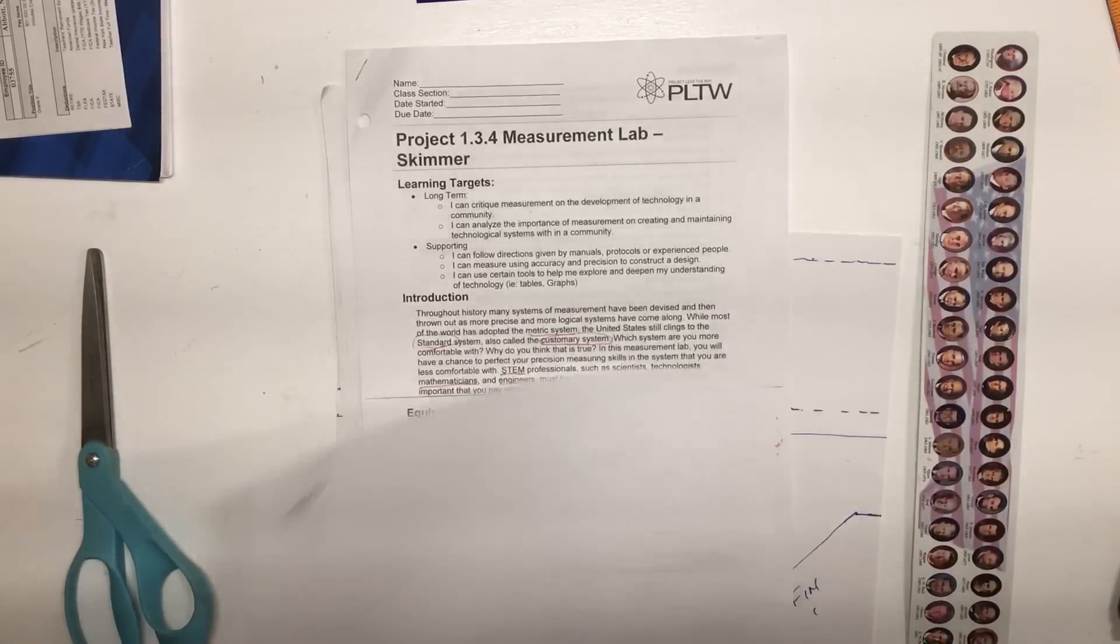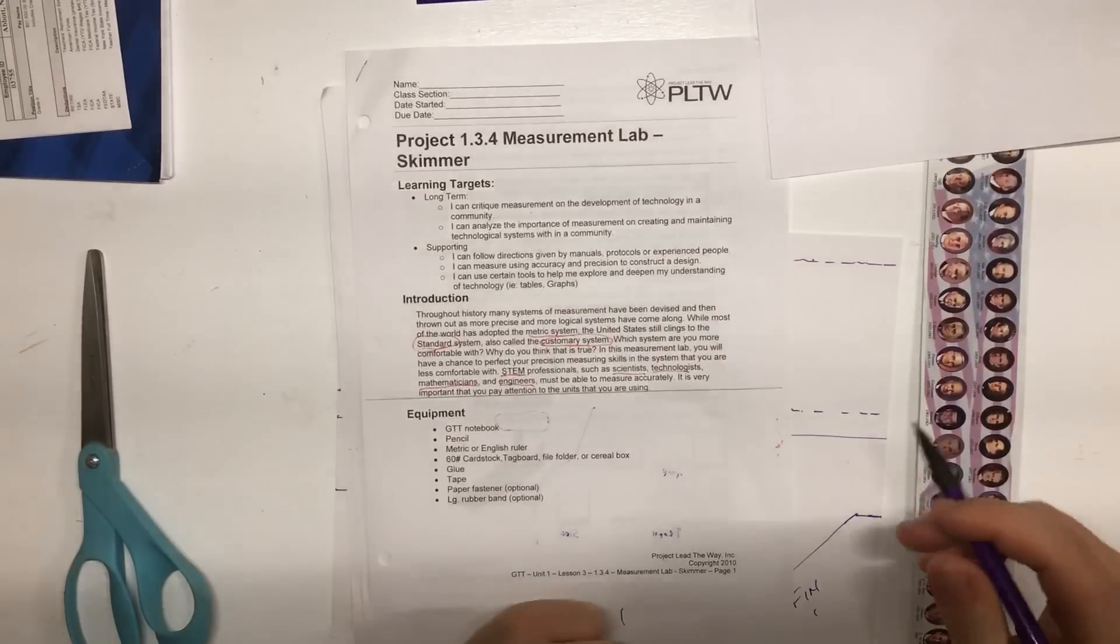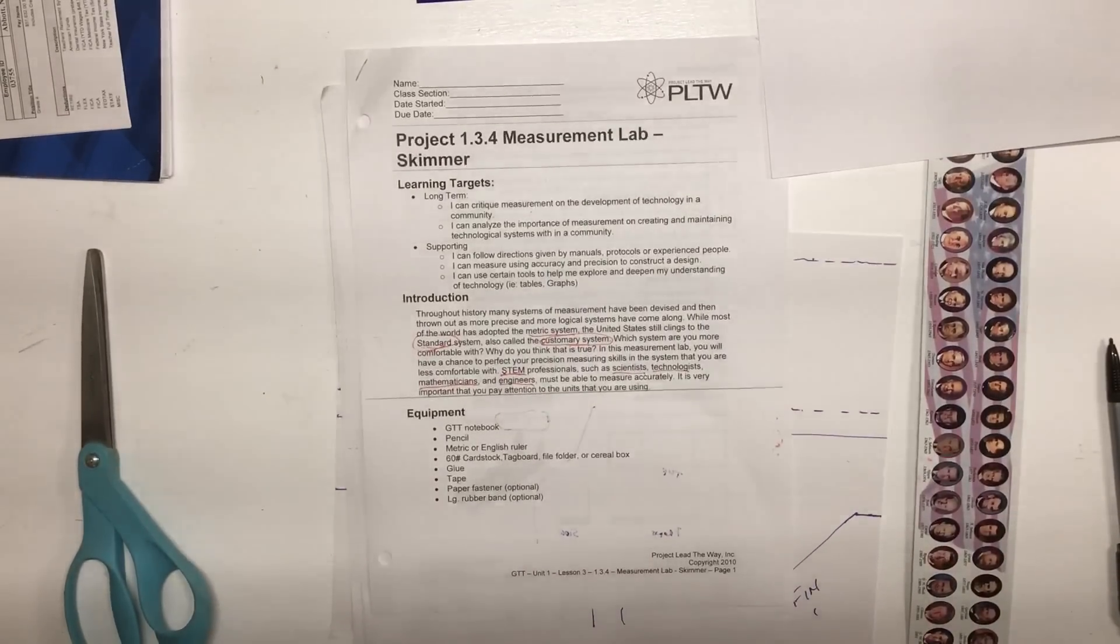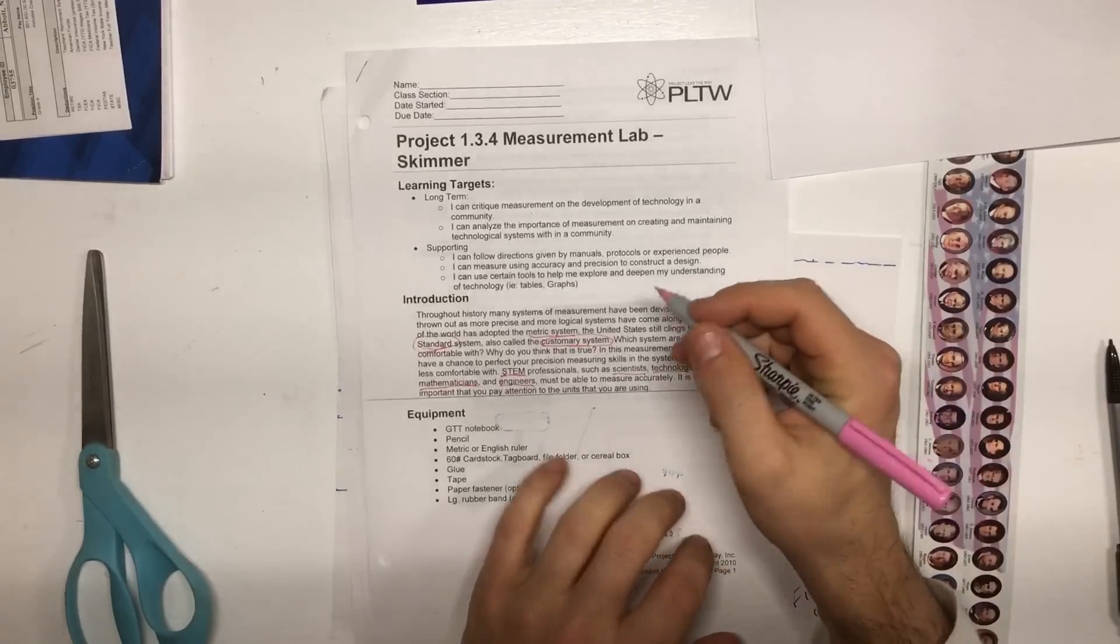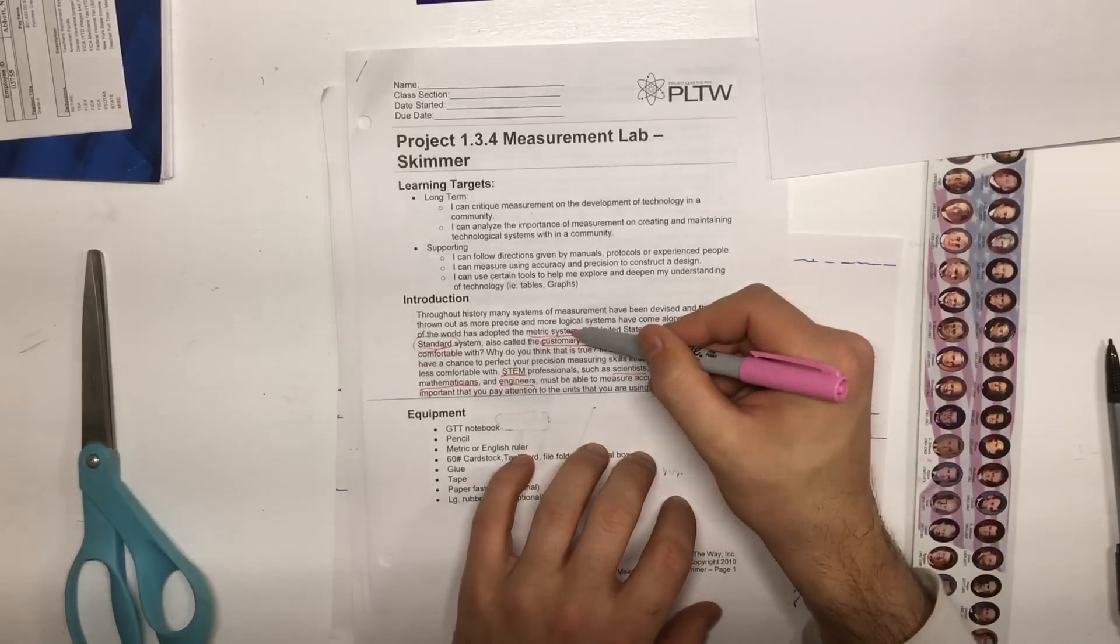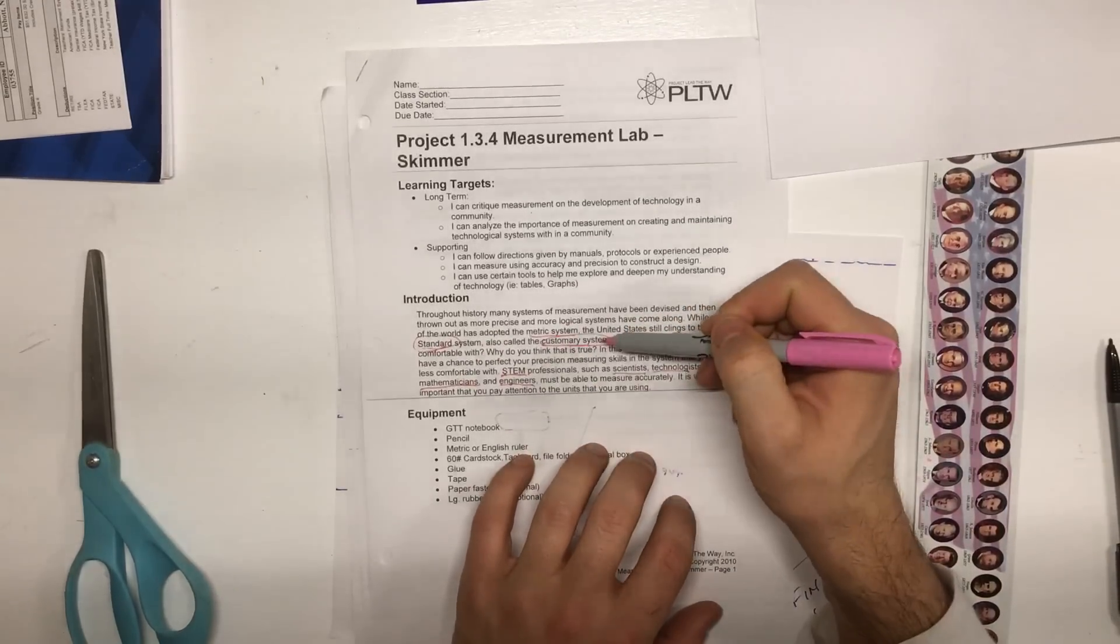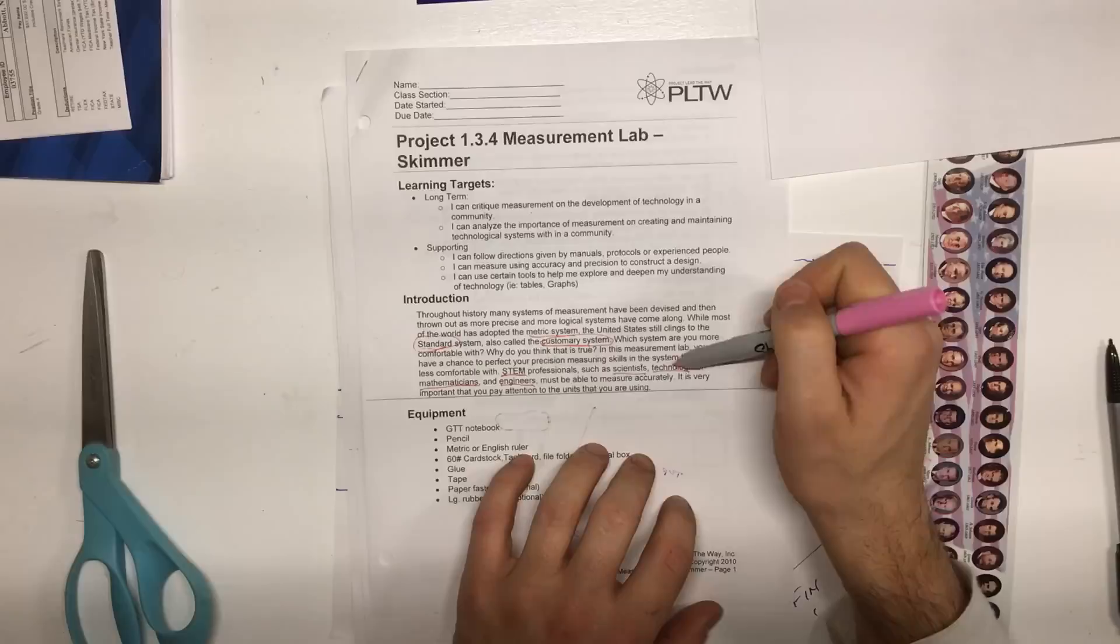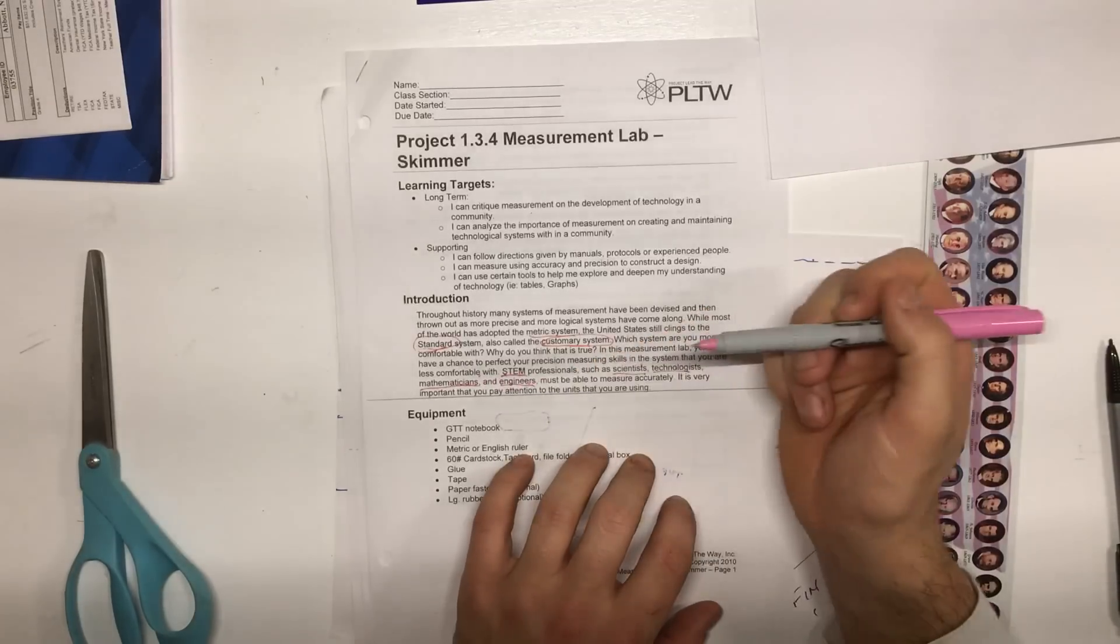Okay, as you can see I've identified some of the vocabulary words that are being assessed or being talked about during this project. They include the metric system, the standard system, the customary system, STEM, scientists, technologists, mathematicians, and engineers.